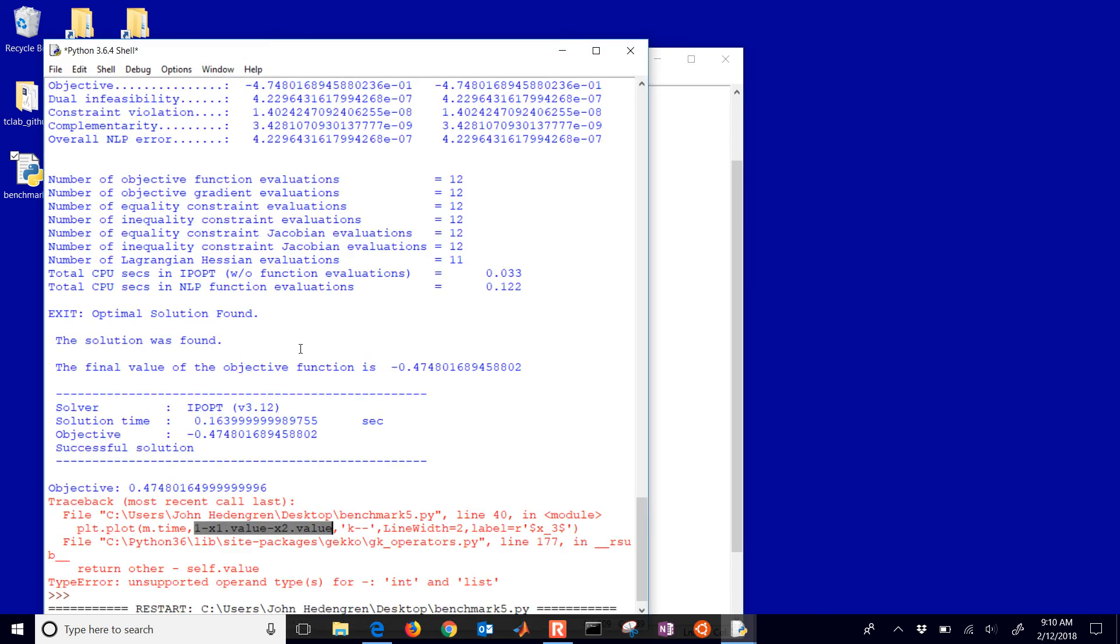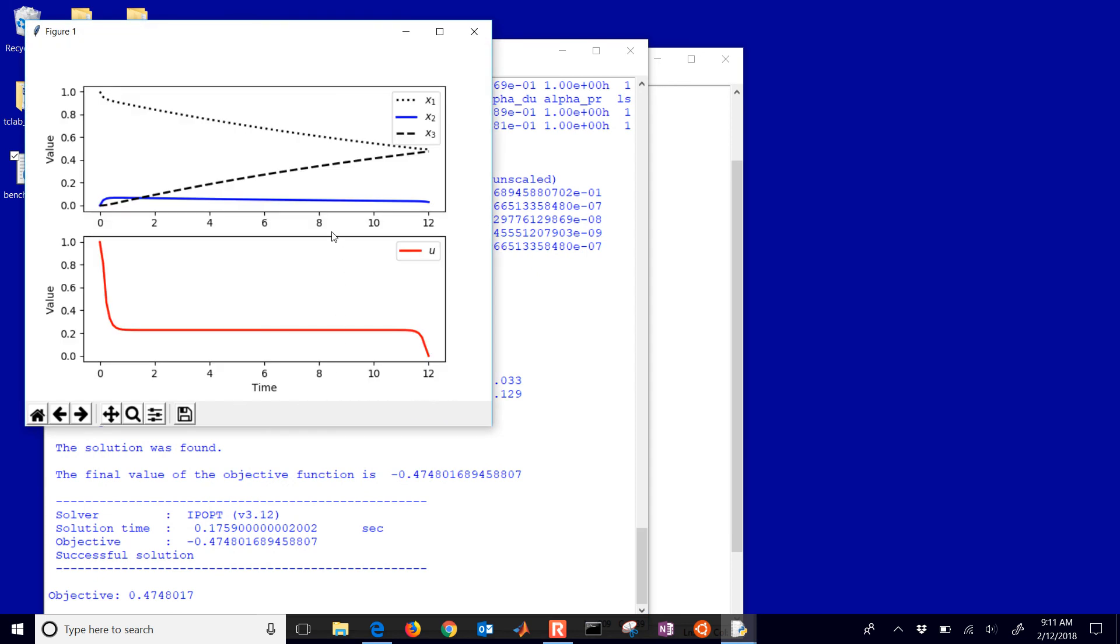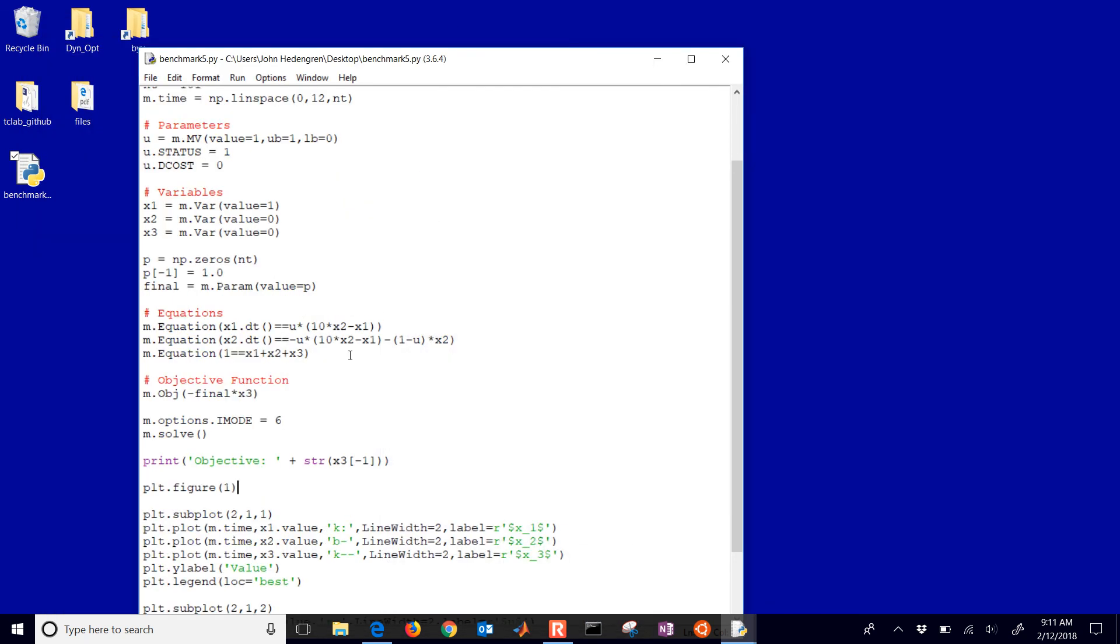Let's go ahead and just optimize this again. So here we have the value of x3 that's shown. It's a black dashed line, and there it maximizes the value. We've got the same u value as before. The difference is that we really just kind of simplified the objective expression. We just added a new equation, and we added that new variable as well.